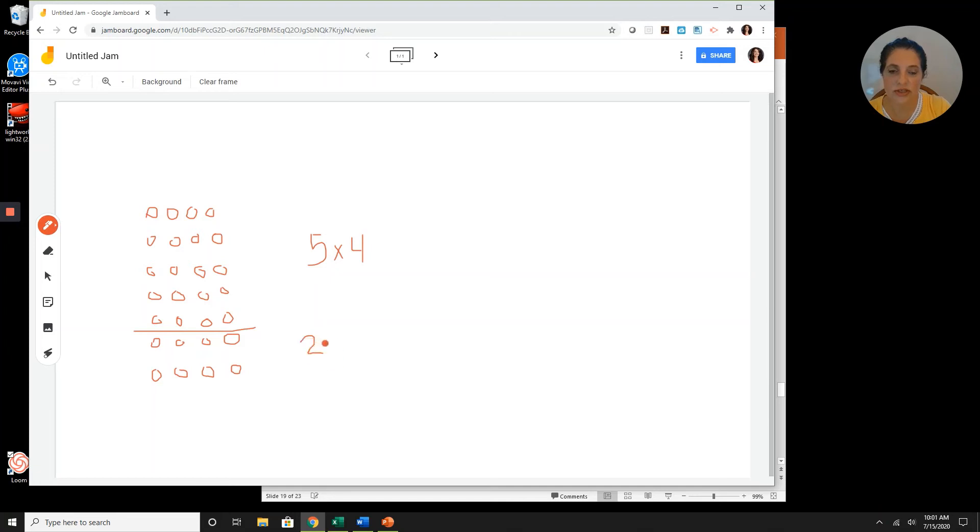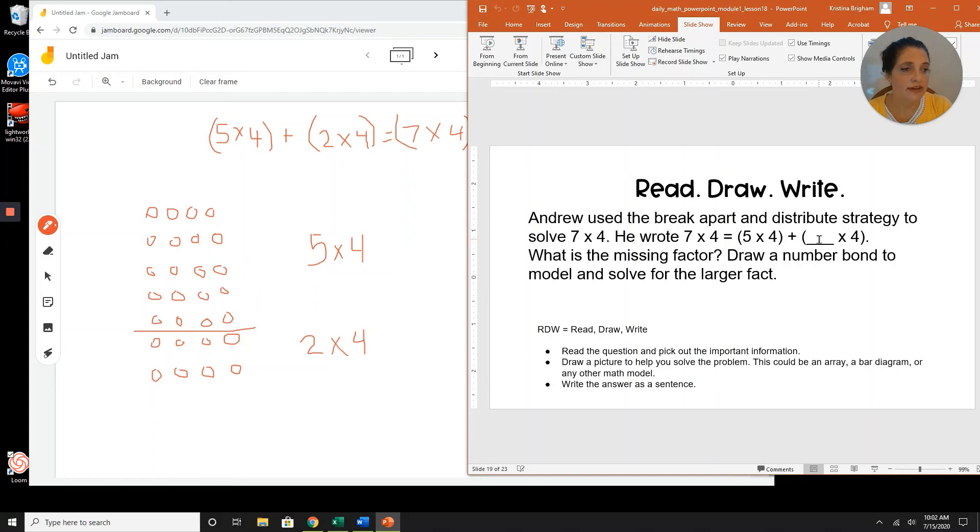And now I can see that I have two more rows of four. So that missing factor is a two, right? Five times four. In parenthesis, of course, to set it apart, plus two times four equals seven times four. So now I can answer with the question, what is the missing factor? But I still haven't drawn a number bond to model it. So let's do that now.